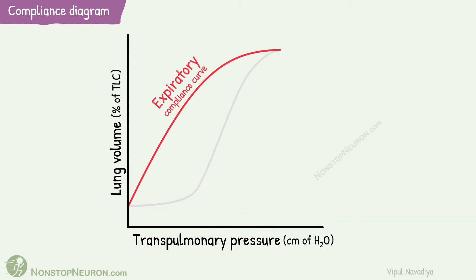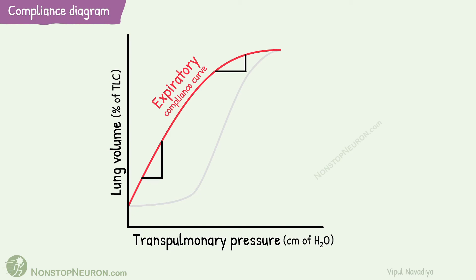Conventionally, the deflation curve is used to measure compliance of lungs. Finding the slope of the curve gives the value of compliance. Note that compliance is different at different lung volumes. At the lower range, compliance is high — meaning there is a rapid increase in lung volume with increasing transpulmonary pressure. At higher ranges, compliance is less — meaning there is a relatively small change in lung volume with increasing transpulmonary pressure. Thus, compliance is higher at lower lung volumes compared to higher volumes.